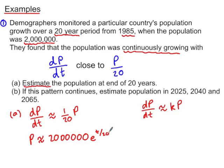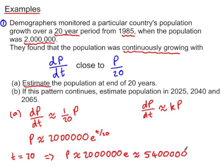Now if we want to estimate that population at the end of 20 years, we substitute in a value of t equals 20, and that tells us that p is approximately equal to 2 million, e to the power of now 20 over 20 is just 1, so this is 2 million e. And then if you put that into your calculator and round to two significant figures, it's 5.4 million, or 5,400,000. Remembering that the convention when estimating is to round to two significant figures.